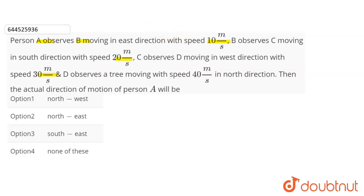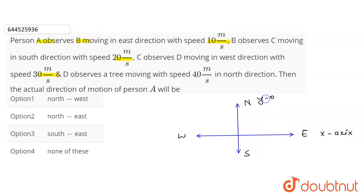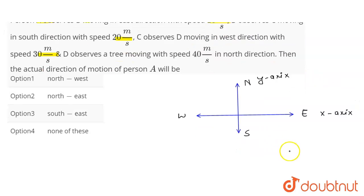First, draw the coordinate system: east-west is along the x-axis, north-south is along the y-axis. Person A observes B moving east, meaning A is at rest and B moves east at 10 m/s. So we can write the velocity of B with respect to A as 10î.